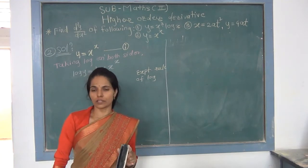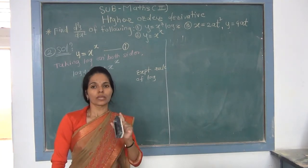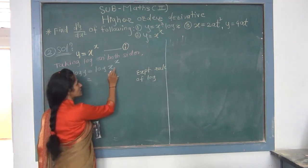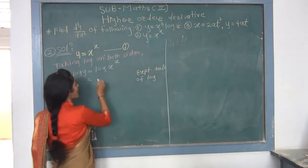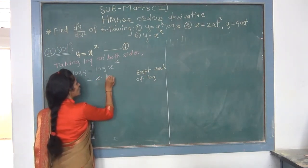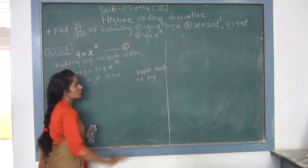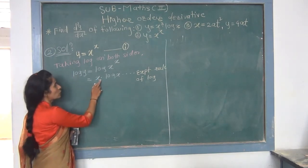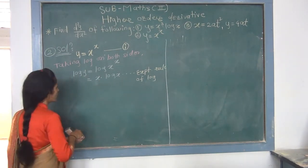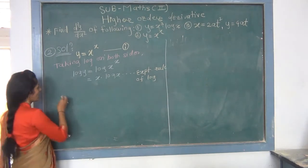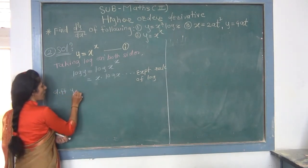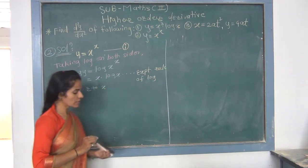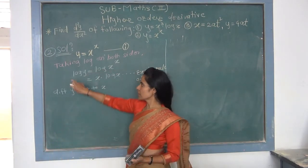Substituting into the formula: dy/dx = (dy/dt)/(dx/dt) = 4a/(4at). We can cancel 4a from numerator and denominator, giving dy/dx = 1/t. This completes finding the first order derivative for the parametric function.